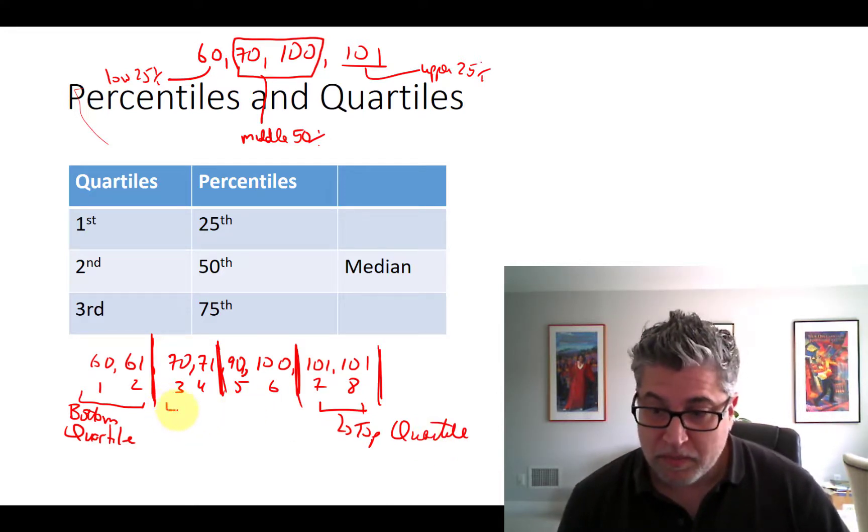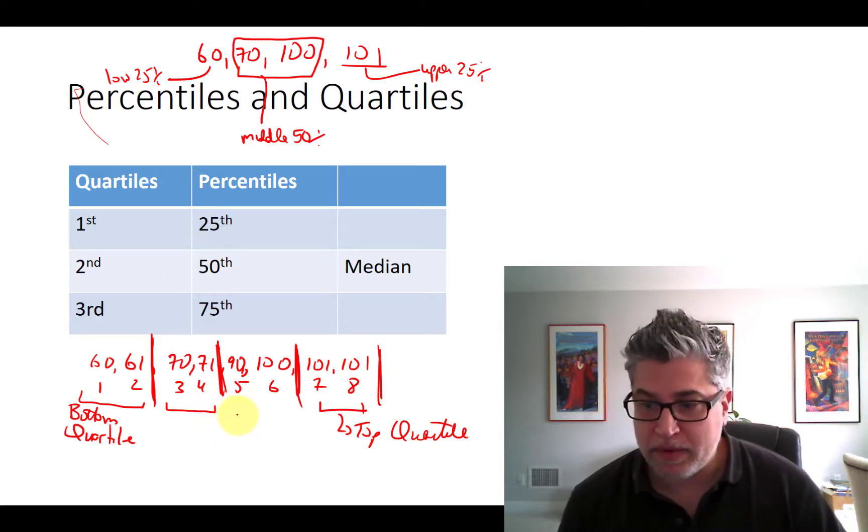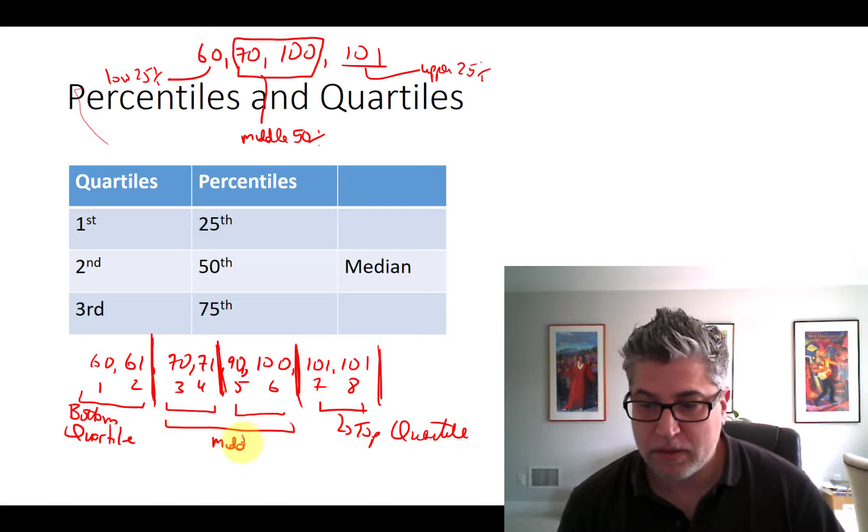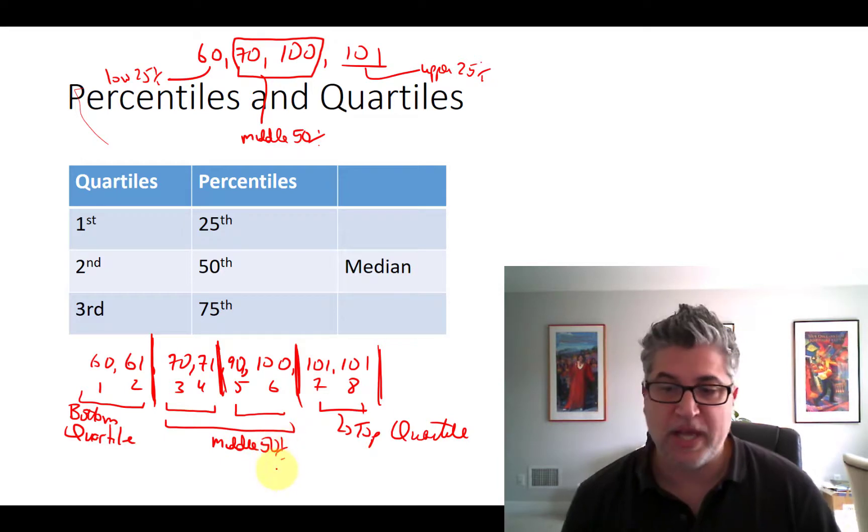We could talk about the second to bottom and the third to bottom, or we could just call these the middle 50 percent.